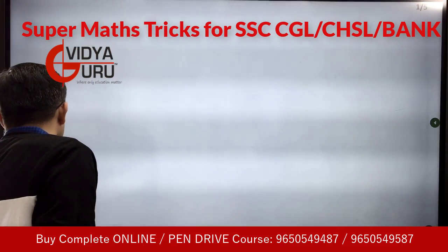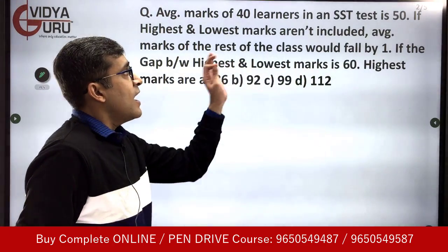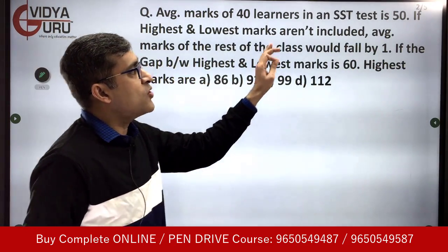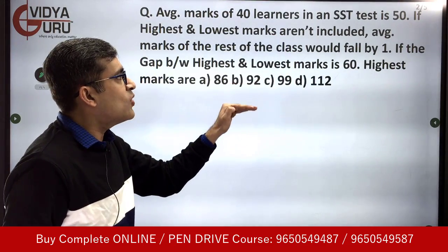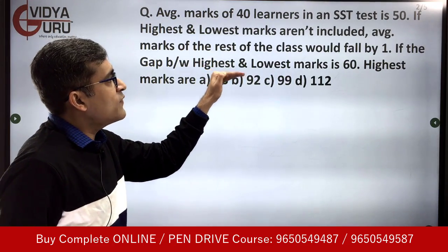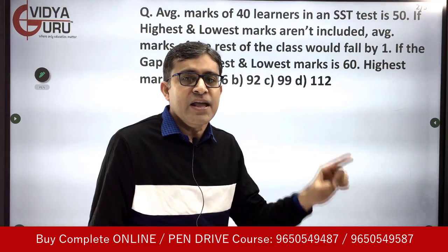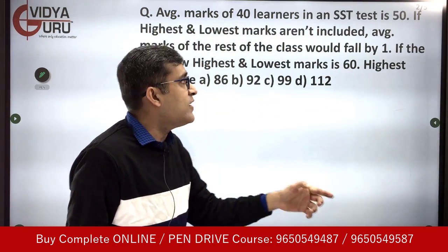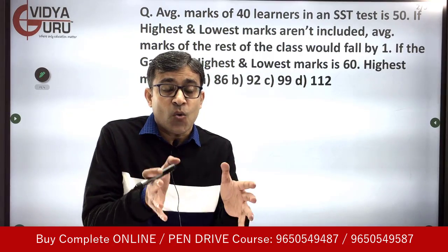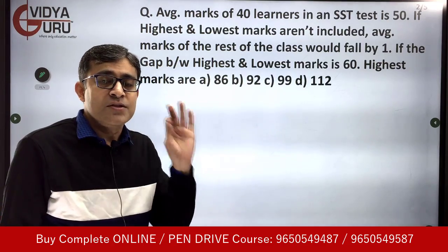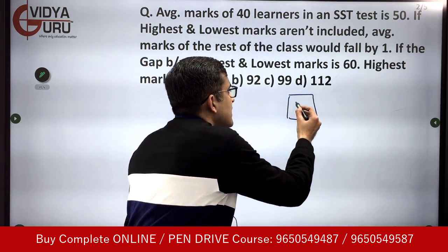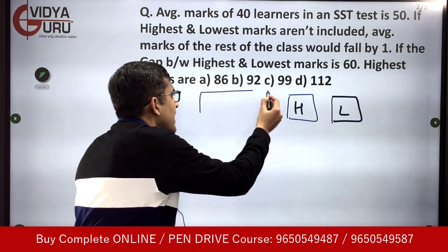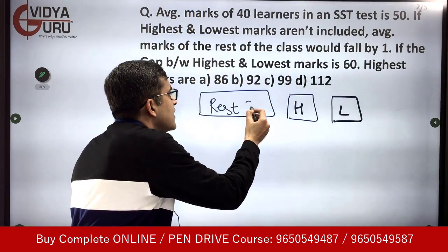Let's start with the first question. Average marks of 40 learners in an SST test is 50. If the highest and lowest marks are not included, the average marks of the rest of the class would fall by 1. The gap between the highest and the lowest marks is 60. We have to find out the highest marks. We can divide this class into three parts: the person scoring the highest, the person scoring the lowest, and the remaining 38.